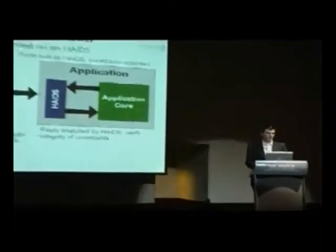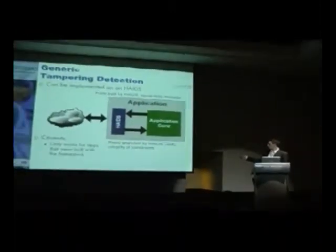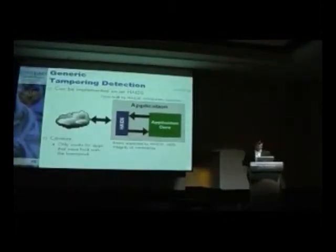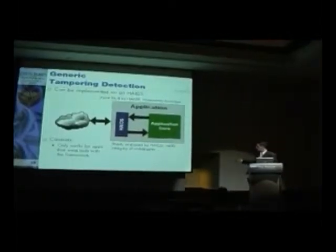Detection can be implemented in the framework itself, which is a lot more accurate. The application asks the HIDS to build a form, and at build time the framework can record all the constraints. On the way back, it can verify the integrity of all those constraints.